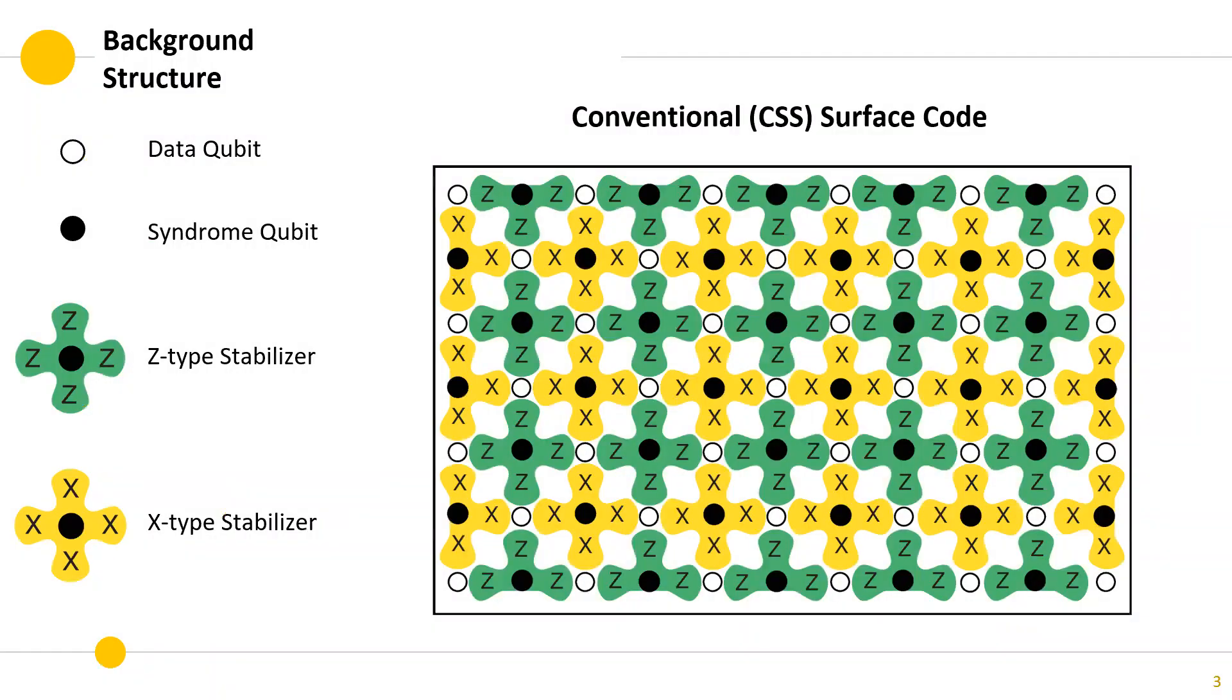In the conventional surface code, the qubits are arranged in a lattice where every data qubit is surrounded by four syndrome or ancillary qubits and vice versa. Every syndrome qubit acts on the neighboring data qubits by the stabilizing process. We have two types of stabilizers, X-type and Z-type. These two are arranged in alternating rows.